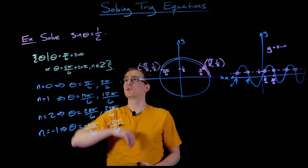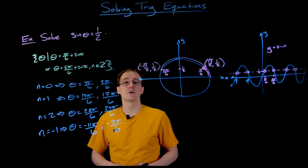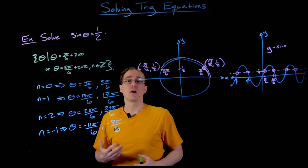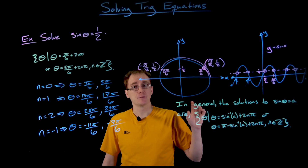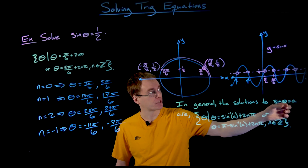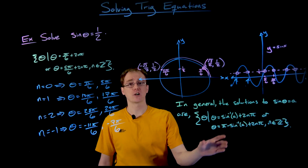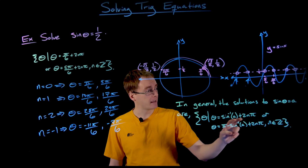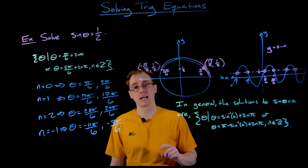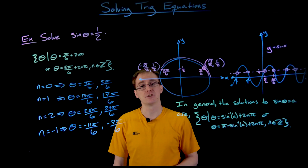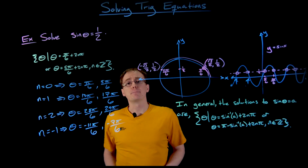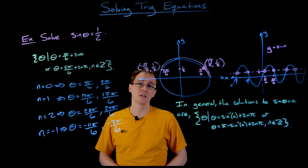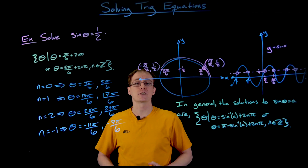We've solved our first basic sine equation and found all solutions to sine of theta = 1/2. Now let's generalize this process for any basic sine equation — especially helpful for values not on our unit circle. In general, if we want to solve sine of theta = a, all solutions are listed by the set: theta = sin⁻¹(a) + 2nπ, or theta = π − sin⁻¹(a) + 2nπ, where n is an integer. When we solved our first example, we used the unit circle to find π/6 and 5π/6, but the general solution uses the sine inverse function.